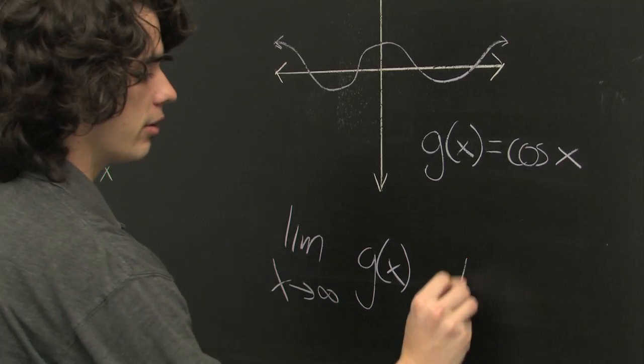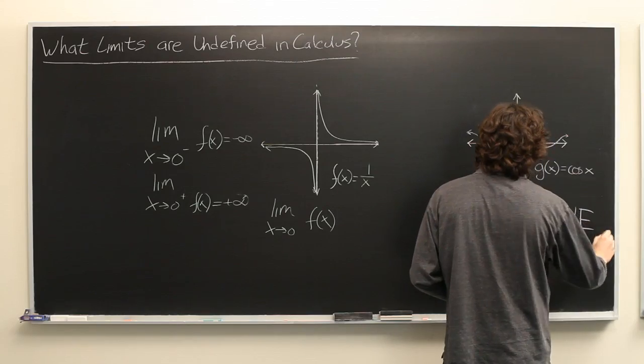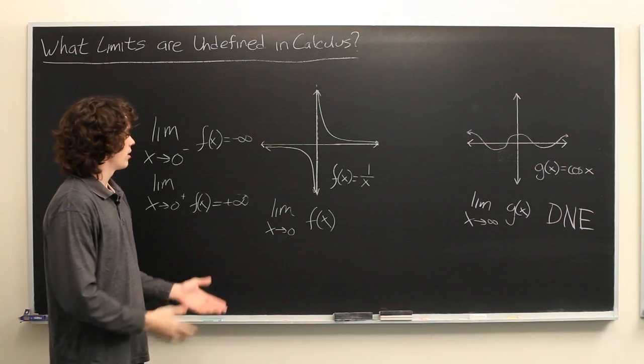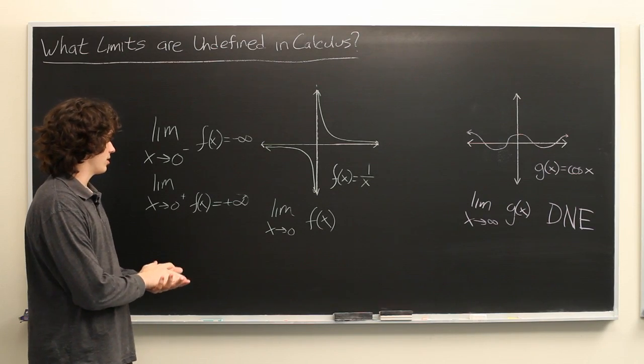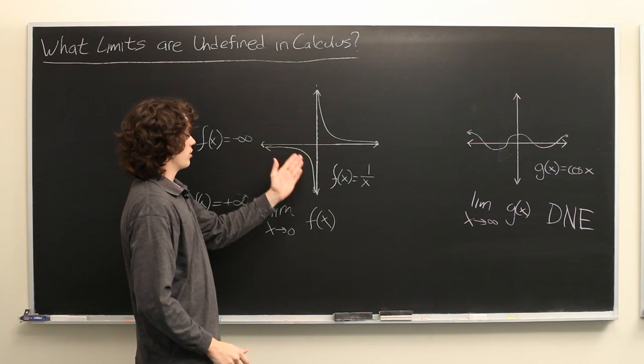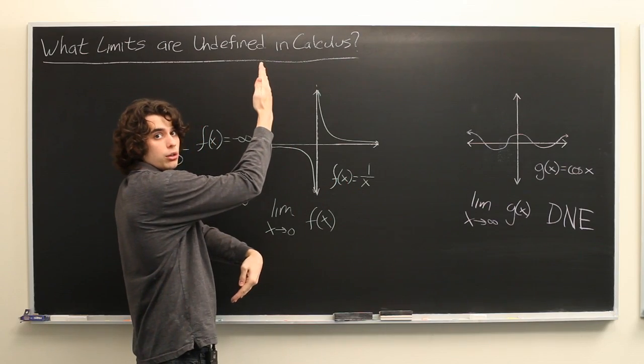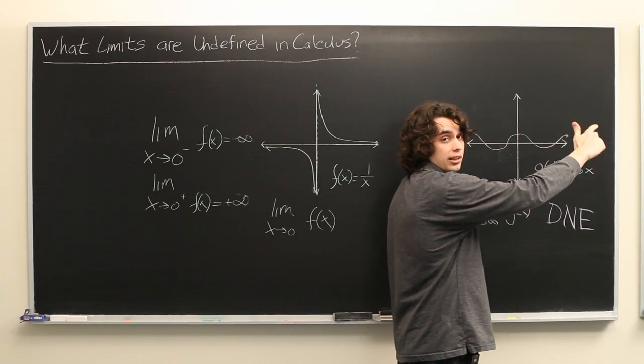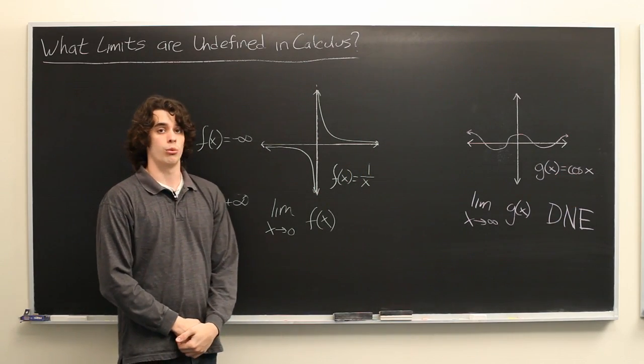So this does not exist. So again, two examples of functions with limits that don't exist. If there is a discontinuity at which the function approaches two different values from different directions, or if the end behavior oscillates and does not approach a single value, then those limits will be undefined.